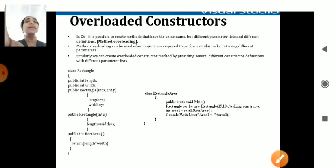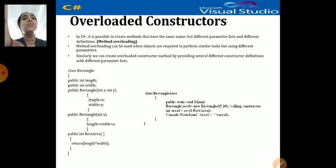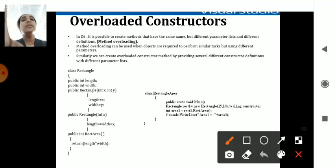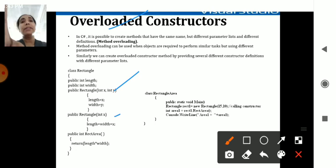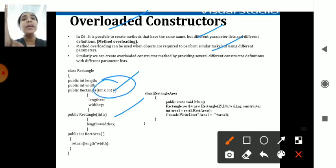Moving on to overloaded constructors — overloaded means multiple constructors are present, each having various parameters. You can check out that one constructor is passing parameters x and y, and another is passing only the parameter x — that is the overloaded constructor.